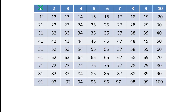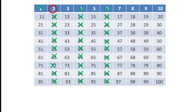2 is a prime number, so we circle 2. All the multiples of 2 are composite numbers, so we are going to cross out all the multiples of 2 — that means all even numbers except 2. This is the easiest method. Now almost half of the numbers have been crossed out.